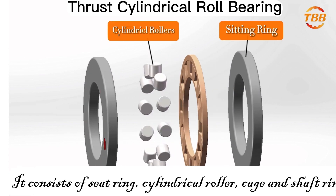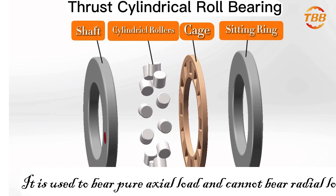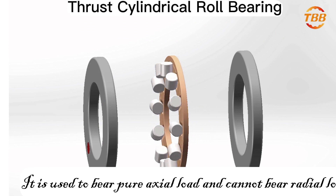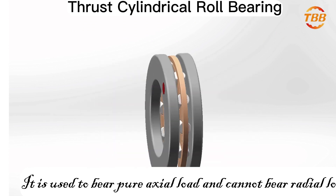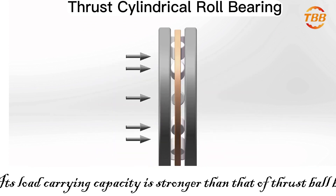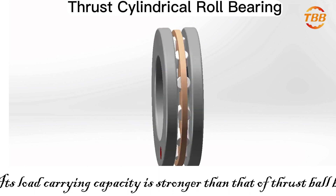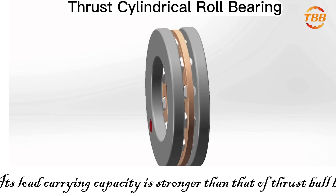This is a set of thrust cylindrical roller bearings. It consists of seat ring, cylindrical roller, cage, and shaft ring. It is used to bear pure axial load and cannot bear radial load. Its load carrying capacity is stronger than that of thrust ball bearings.